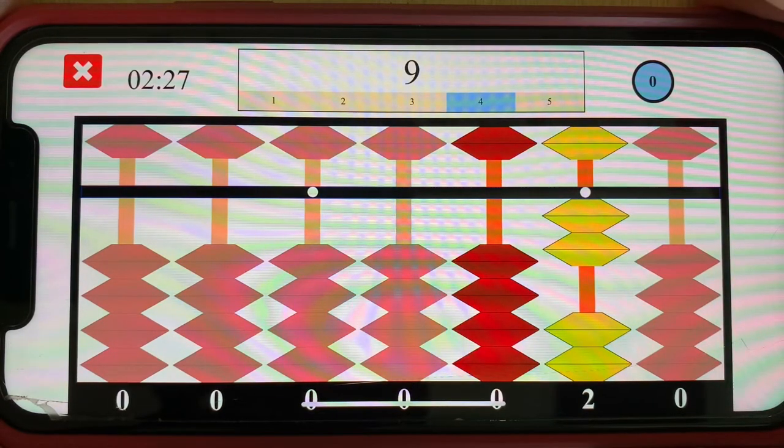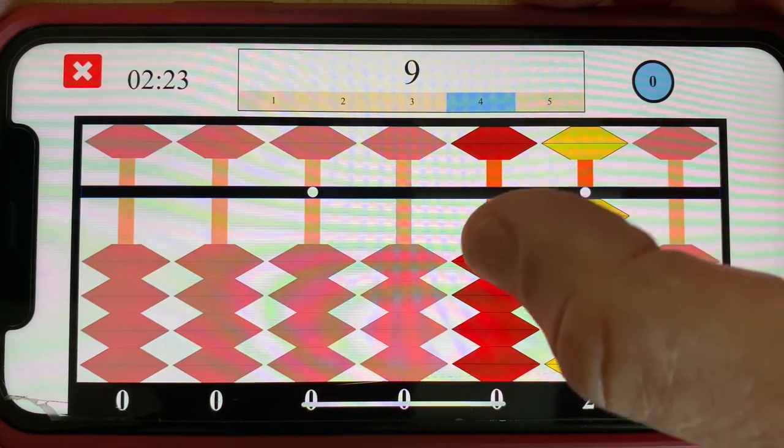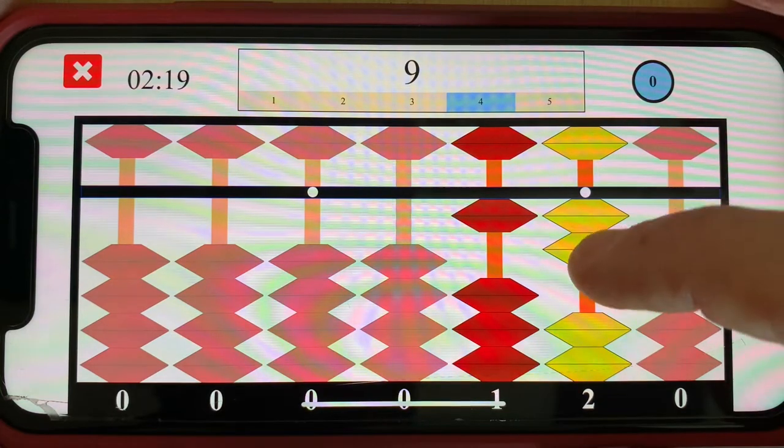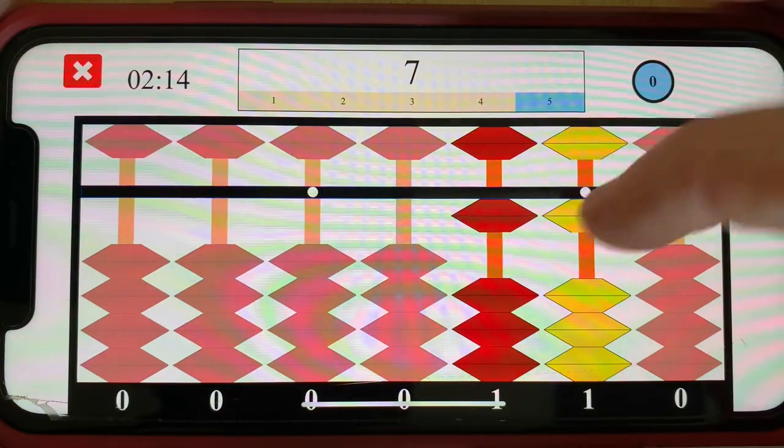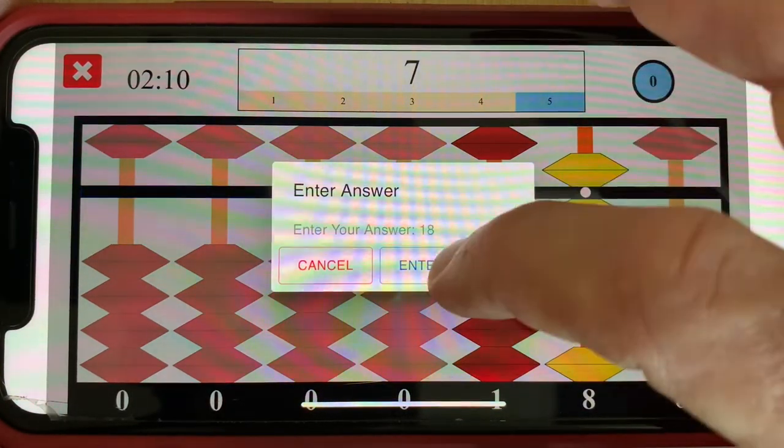Next I'm going to add nine. Well I don't have enough beads on the target rod that's a ten pair. Add one to the next rod left and subtract nine's ten pair one. And finally add seven to the target rod for a final answer of eighteen.